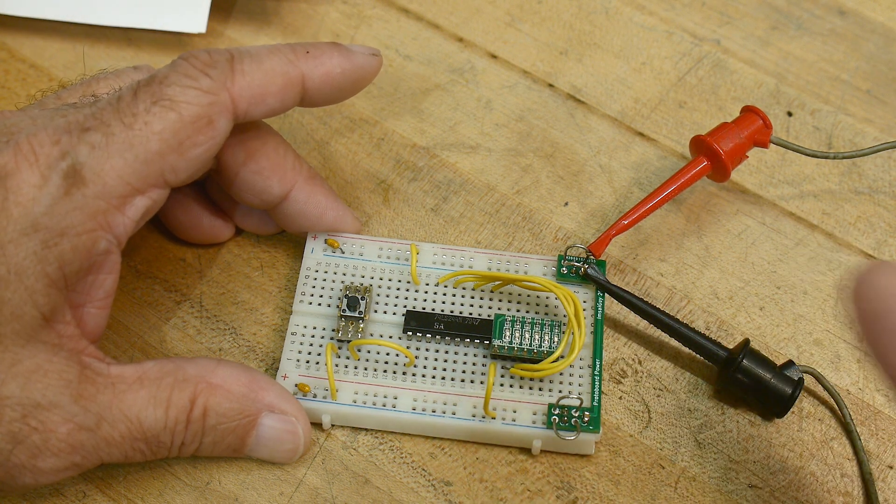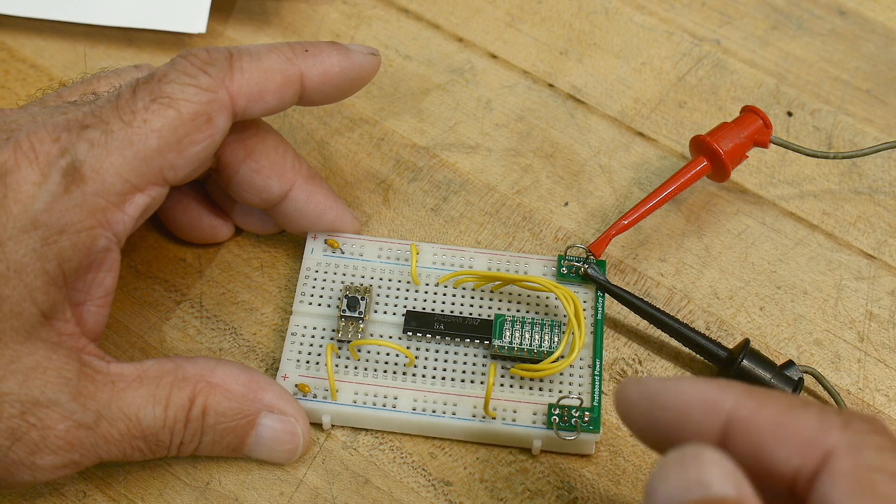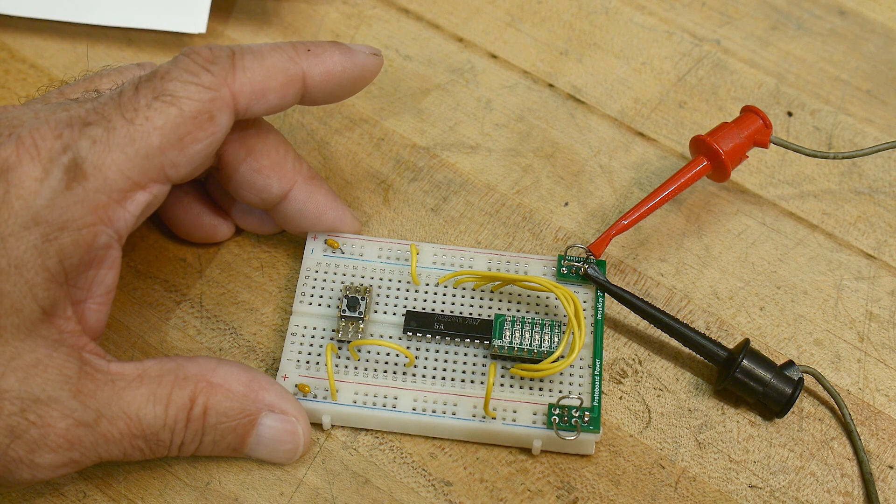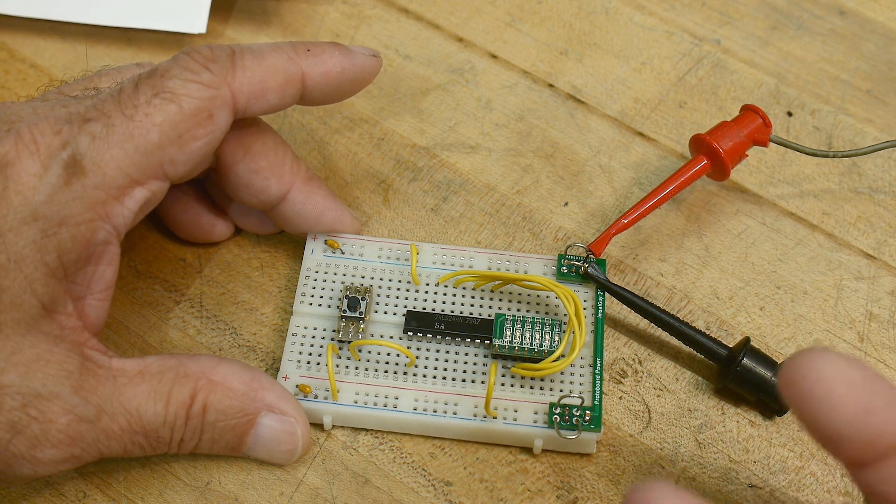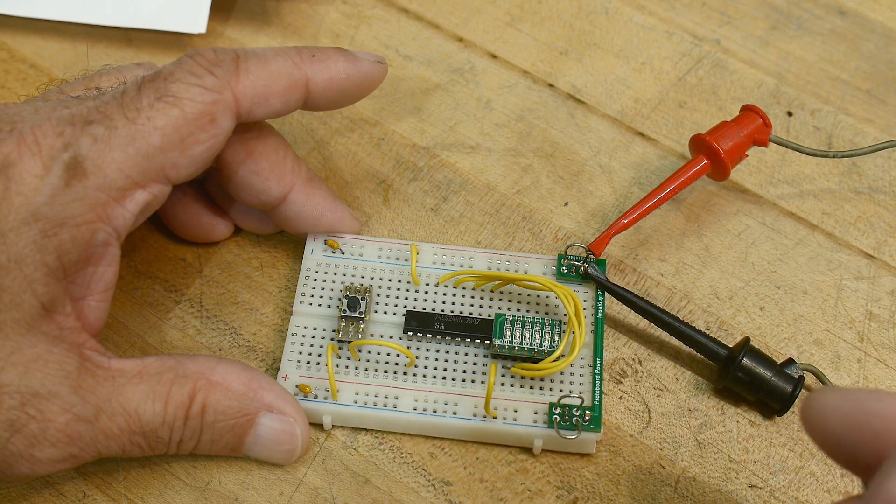So, we have the output hooked up to a bunch of LEDs. If the output is high, the LED will be on. If the output is low, the LED will be off. And if the output is tri-stated, the LEDs will also be off.